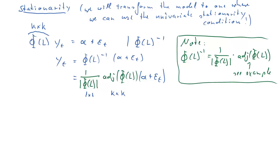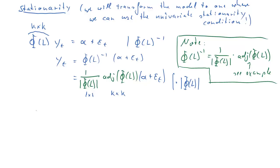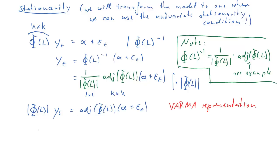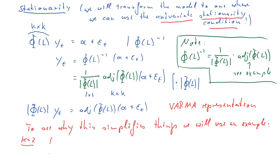So we have 1 over the determinant times the adjoint of the lag polynomial times alpha plus epsilon t. The determinant is a scalar and the adjoint is still a k-by-k matrix. We multiply both sides of the equation by the determinant of the lag polynomial phi(L), giving us: determinant(phi(L)) * yt equals the adjoint of the lag polynomial times alpha plus epsilon t. This is what we call the Wold representation — we have lags on the left-hand side for the yt's and lags for the epsilons.